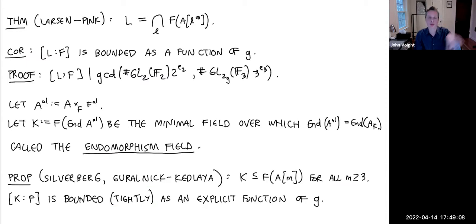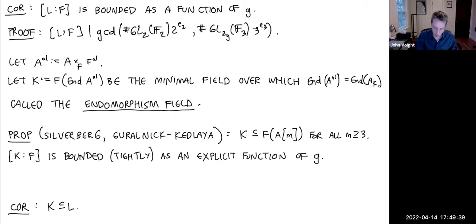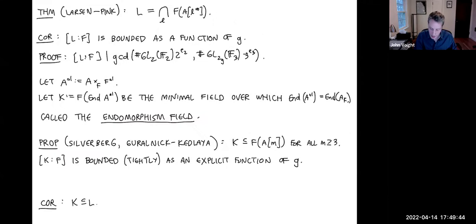For elliptic curves you need only a quadratic extension to see endomorphisms. For genus 2, the worst case is degree 48, where you have the square of a CM elliptic curve. This characterization together with Pink's theorem already tells you that K is contained inside L.